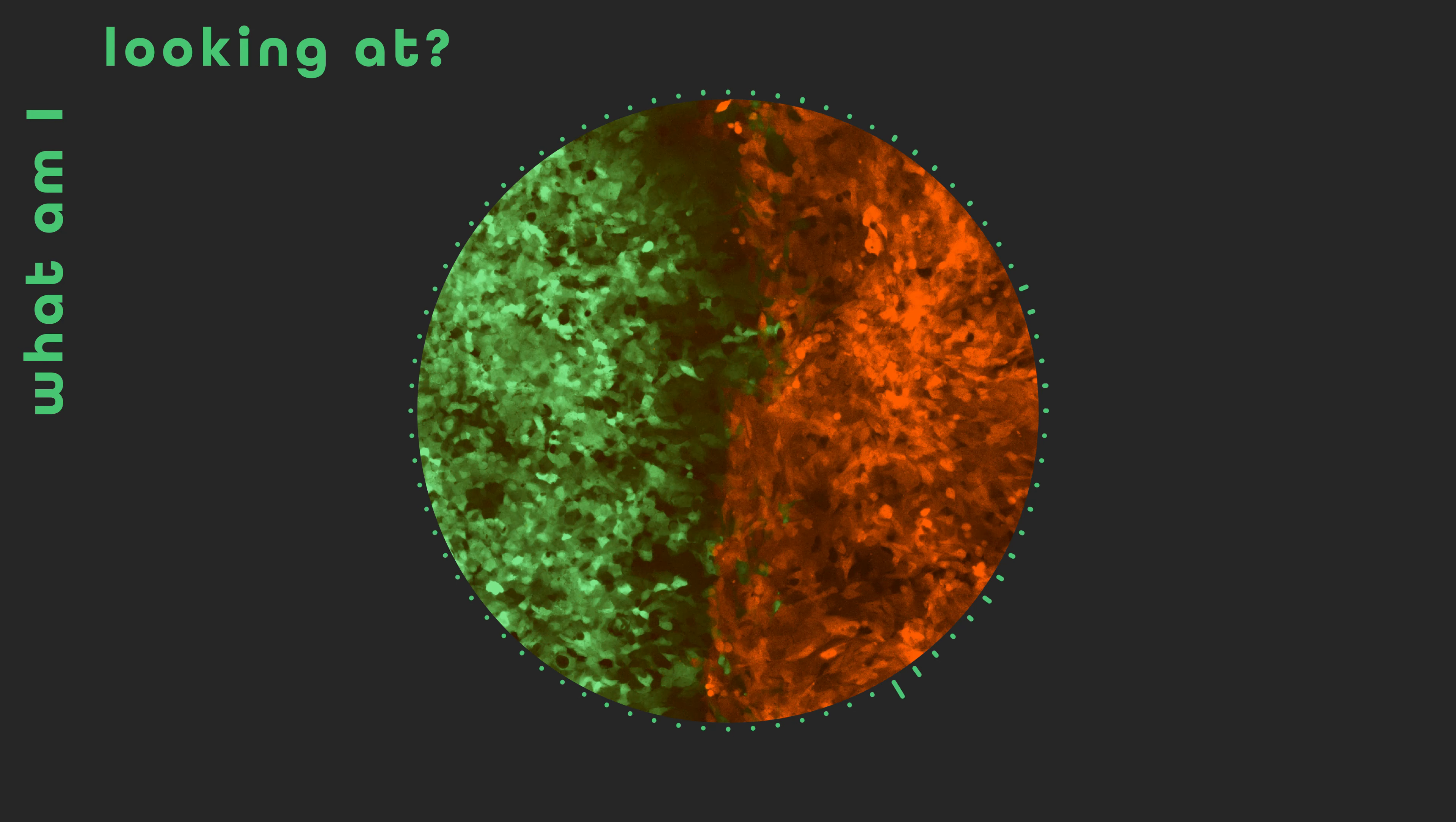Observe two armies facing off under a microscope. The green troops are the body's own epithelial cells that line and protect our organs, while the red invaders are breast cancer cells. Labeling these cells with different fluorescent colors reveals the unfolding of this confrontation in real time.